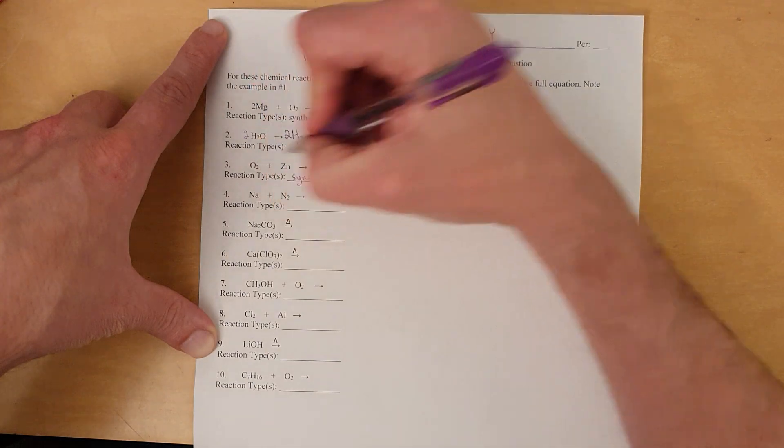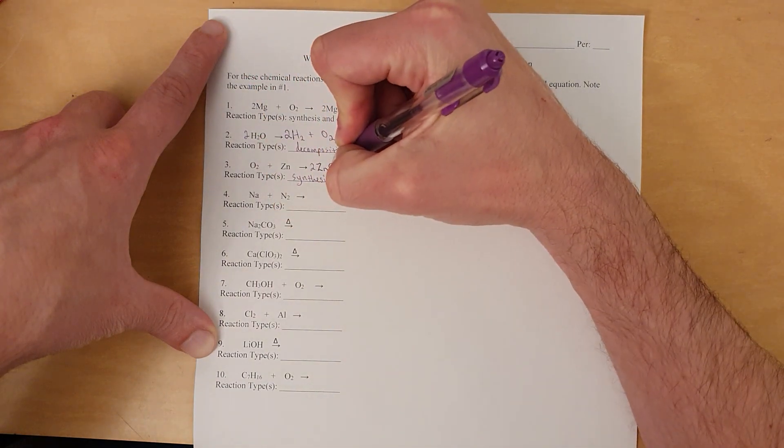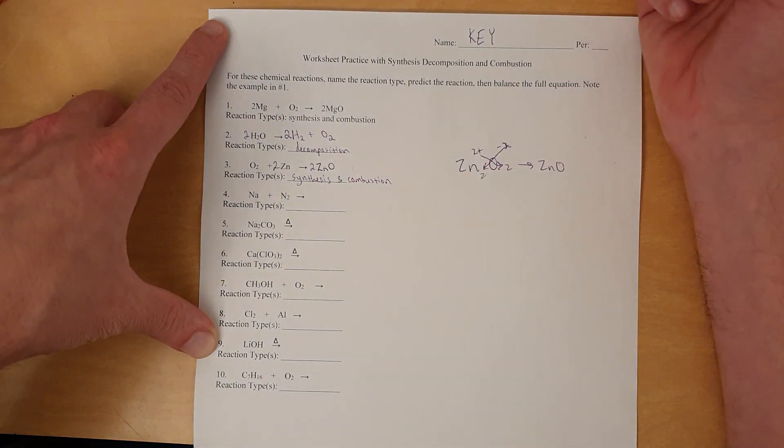So, then we just got to balance. 2 oxygen. We'll put a 2 here that weighs 2 oxygen, 2 zinc, 2 zinc. There we go. Done.